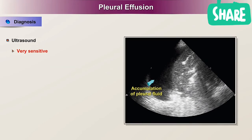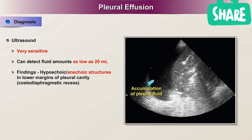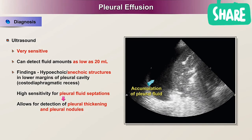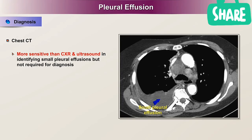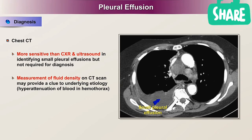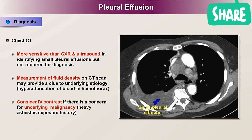Ultrasound is very sensitive and can detect fluid amounts as low as 20 mL. Findings include hyperechoic or anechoic structures in the lower margins of the pleural cavity at the costophrenic recess, high sensitivity for pleural fluid septations, and allows detection of pleural thickening and pleural nodules. Commonly used for planning thoracentesis. Chest CT is more sensitive than chest X-ray and ultrasound in identifying small pleural effusions. Measurement of fluid density on CT may provide a clue to the underlying etiology, e.g., hyperattenuation of blood in hemothorax. Consider intravenous contrast if there is concern for underlying malignancy, such as heavy asbestos exposure history.